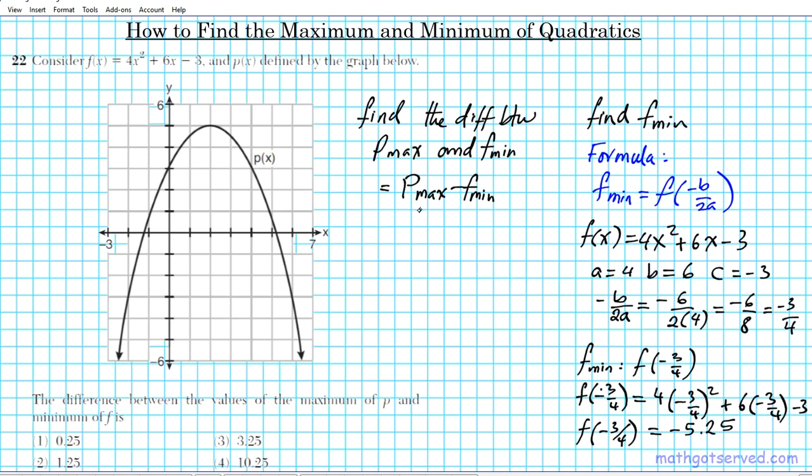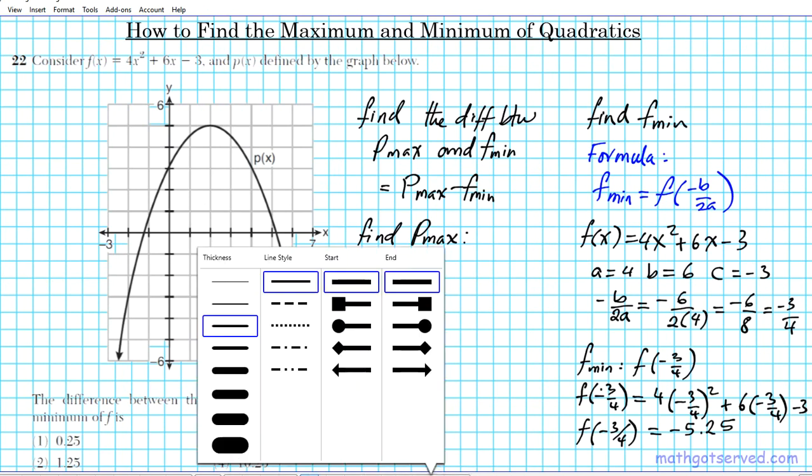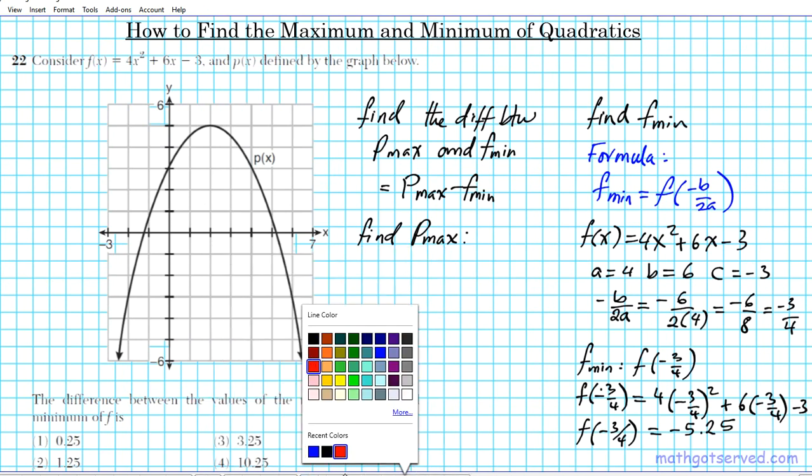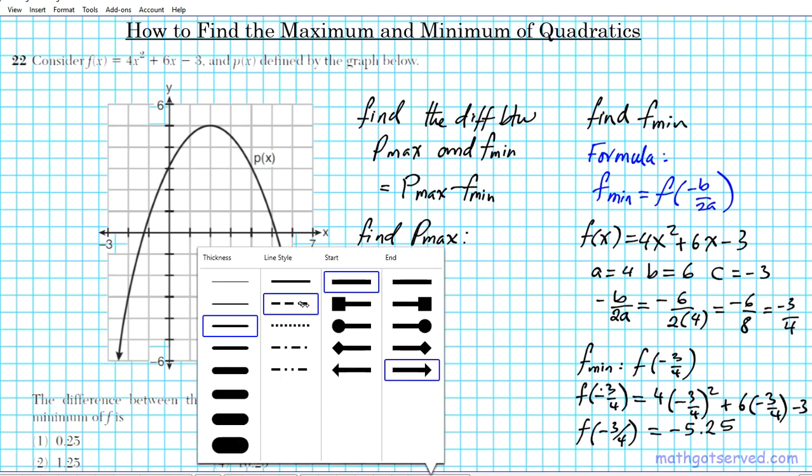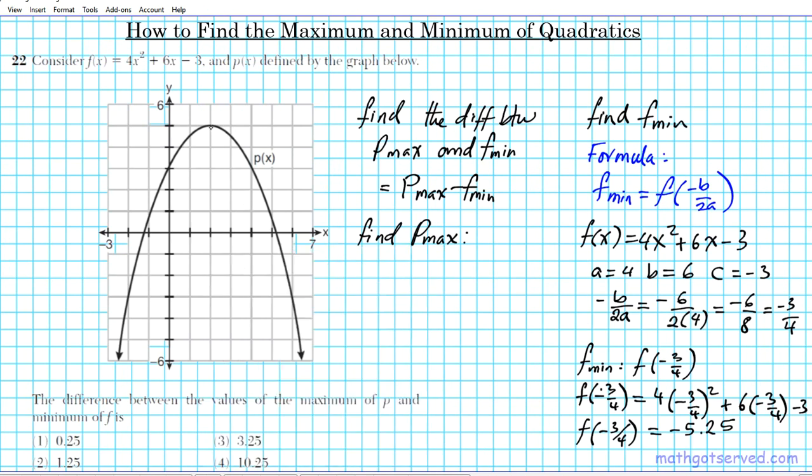Now we have to find P max minus F min. We don't know what P max is, so let's go ahead and find P max. P max can be determined using this graph. So all we do is we are going to trace the x value to the maximum right here.